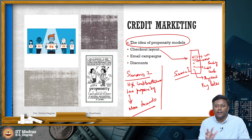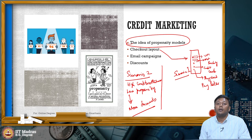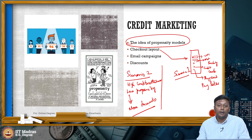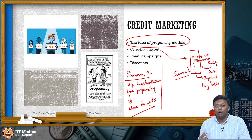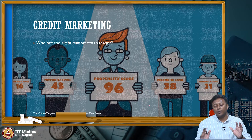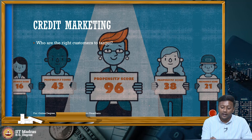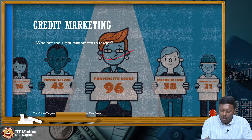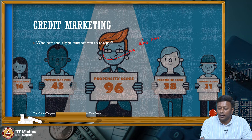So in both these cases, credit marketing or credit propensity models play a huge role — primarily in optimizing your credit bureau pipeline, cost cutting, and also in offers, promotions, and marketing. That is credit marketing: basically identifying who are the right customers to target, who are interested.